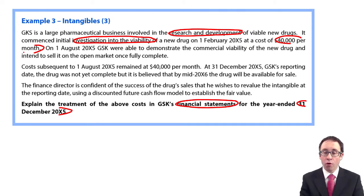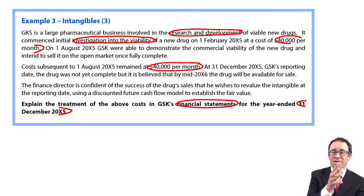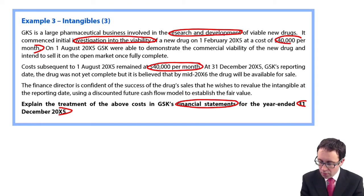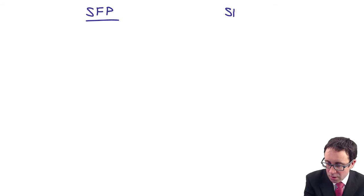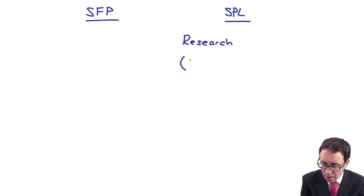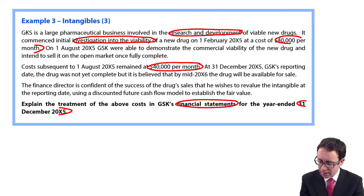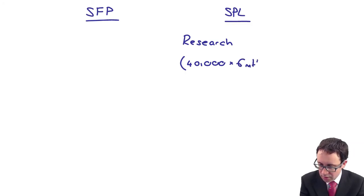As it says here, it's $40,000 per month subsequently. So on the 1st of August, we move from the research into the development phase. Looking at the financial statements — SFP and statement of profit or loss — there is going to be some research expenditure at $40,000 per month. That covers February, March, April, May, June, July — six months. So my research expense is $240,000.